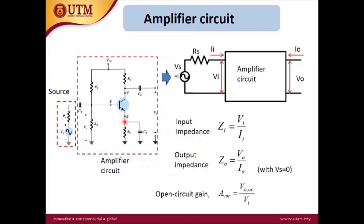In the last week we discussed how we can determine or calculate the operating point, or Q point, of the BJT — which is the collector current and the value of collector-emitter voltage VCE. This week we will examine and analyze the performance of the amplifier circuit.